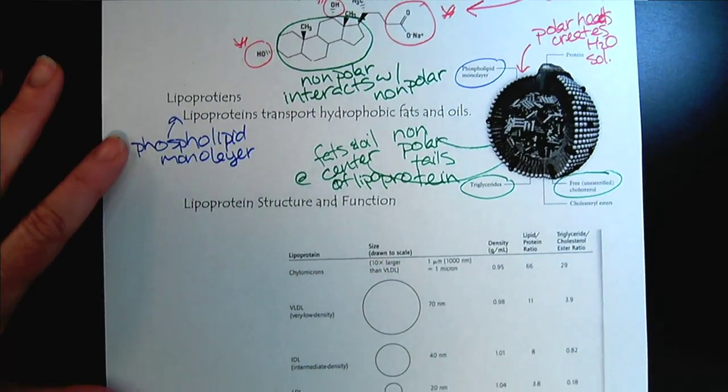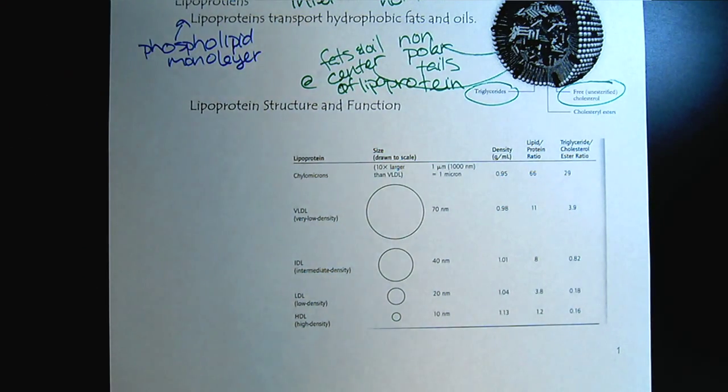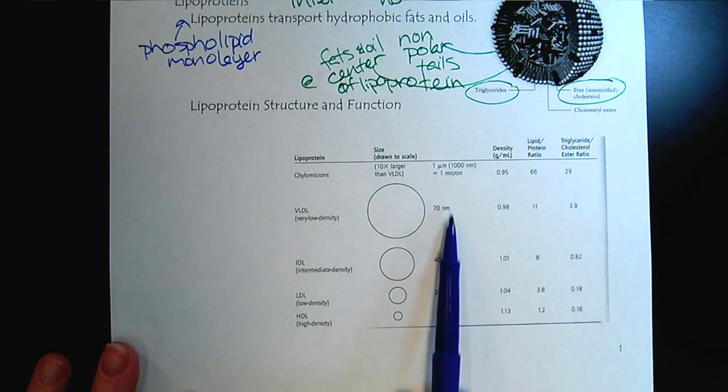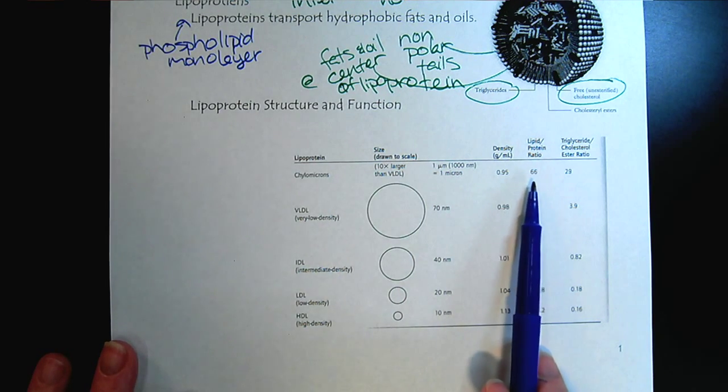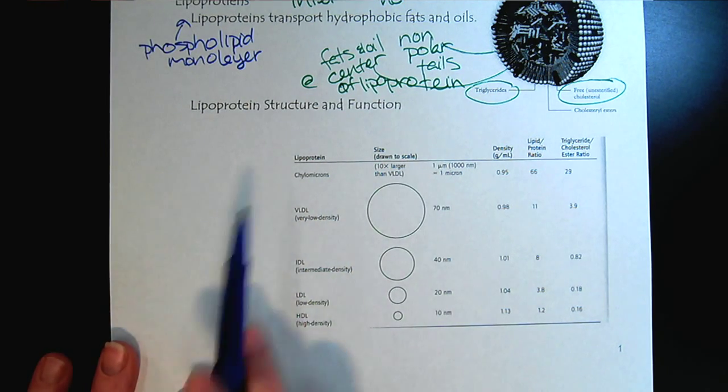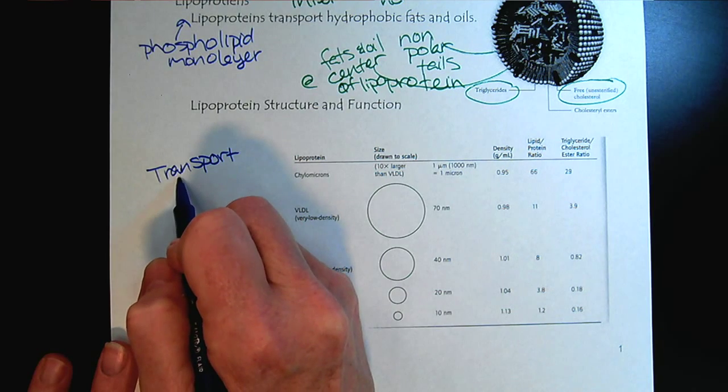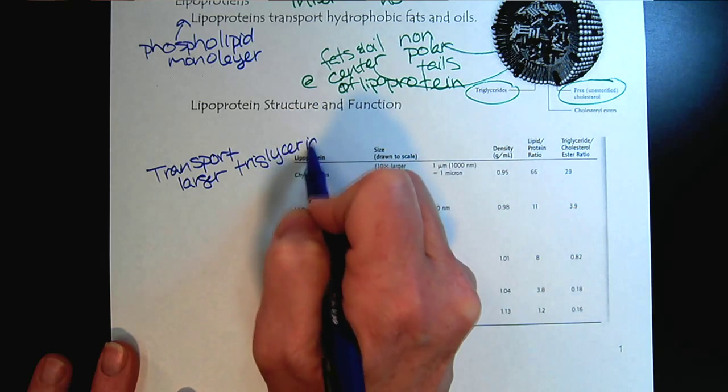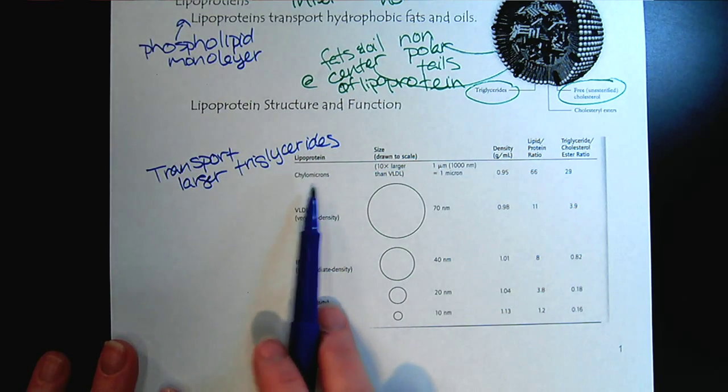So let's look at the variety of lipoproteins out there. The largest, we can see that they're ranked by size. So here is the scale of size from chylomicrons at a full micrometer. And we can look at their density and talk about their ratio of lipids to proteins. And so the chylomicrons, they transport the larger lipids, the larger triglycerides. And then it goes by density. The chylomicrons just go by size.